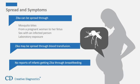Zika virus is spread to people primarily through the bite of an infected Aedes species mosquito. Mosquitoes that spread Zika virus bite during the day and night. A pregnant woman can pass Zika virus to her fetus during pregnancy or around the time of birth. A person infected with Zika virus can pass it to his or her sex partners. Zika virus may be spread through blood transfusions. There is no evidence that Zika is spread through touching, coughing, or sneezing.